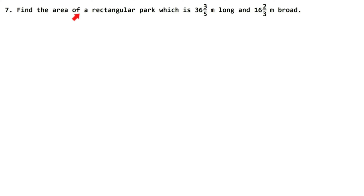Now in the question, find the area of a rectangular park. We have to find the area of rectangular park, which is 36 whole 3 upon 5 meter long. We have to write the length of the park and breadth of the park. So we will write both things.